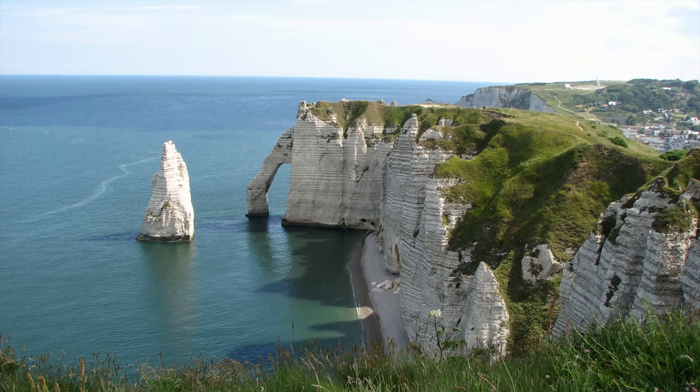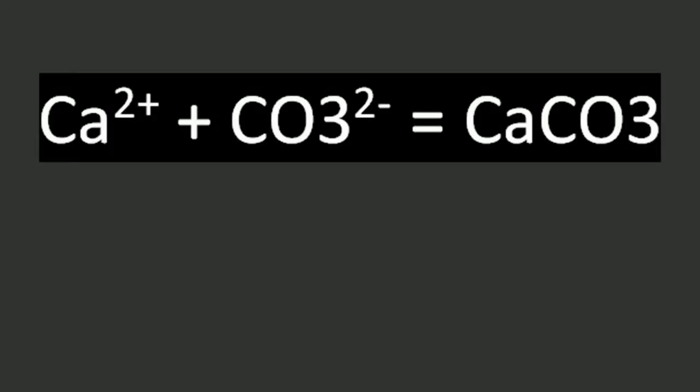If you ever go to the channel coast of either France or Great Britain, you can see white cliffs along the shores. These are made out of limestone — i.e., countless tiny sea organisms. So what does the basic chemistry look like? Ca²⁺ + CO₃²⁻ → CaCO₃. Calcium plus carbonate is calcium carbonate.